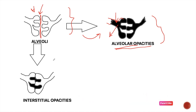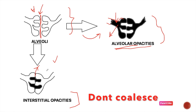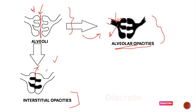The next type of opacity is called interstitial opacity. Interstitial opacities are opacities seen in the connective tissue surrounding the alveoli. They do not coalesce with each other, unlike alveolar opacities, and appear discrete.